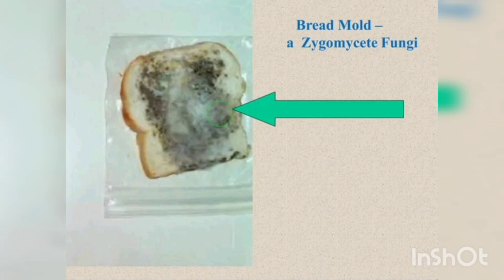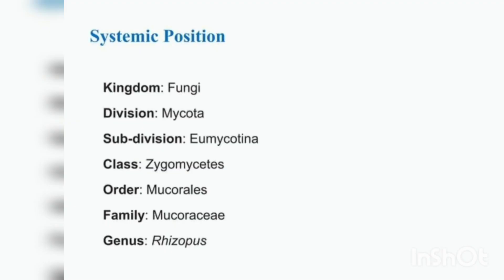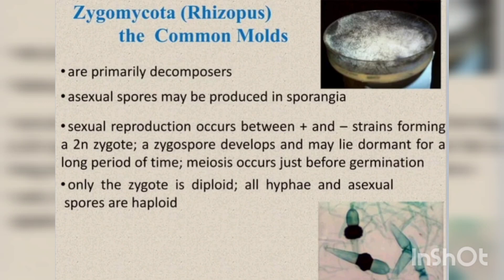Now we are going to discuss Rhizopus, which is bread mold. Its systematic position: subdivision Zygomycotina, family Mucoraceae, genus Rhizopus. Rhizopus is commonly called black bread mold or black mold. It is a saprophytic fungus and grows on a variety of substrata such as jam, moist bread, and decaying foodstuffs.